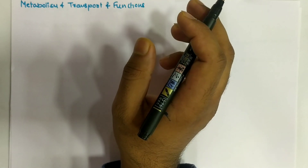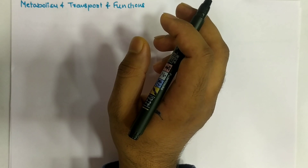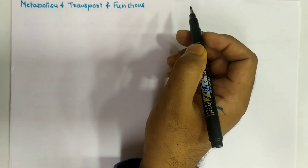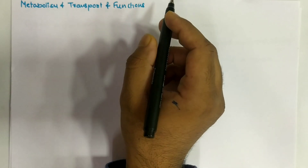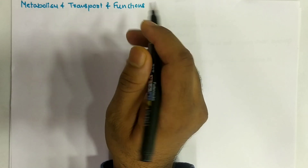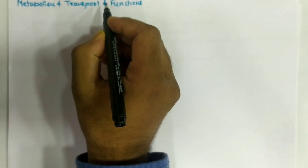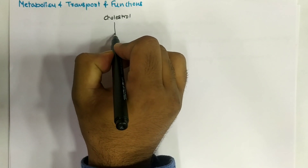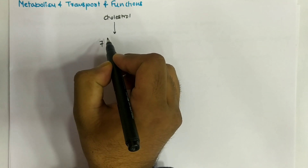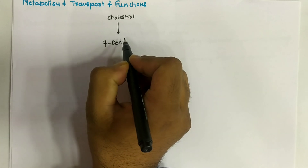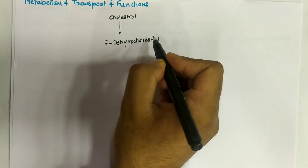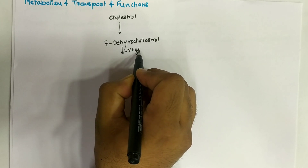We have seen the activation of vitamin D into calcitriol — 1,25-dihydroxycholecalciferol — the active form. Now let's cover the full metabolism, transport, and functions in one diagram. Cholesterol is converted to 7-dehydrocholesterol, and then by UV light it is converted to cholecalciferol.